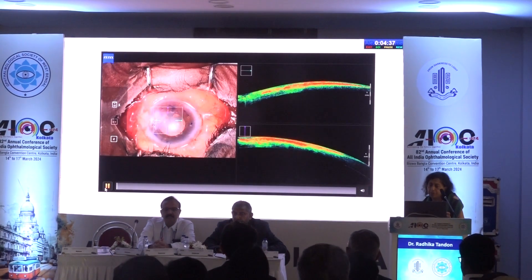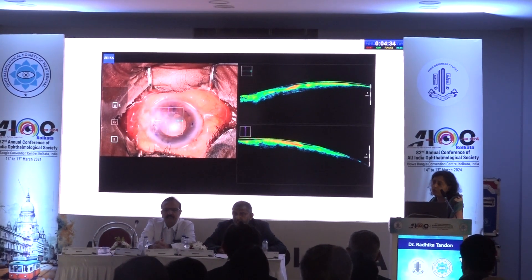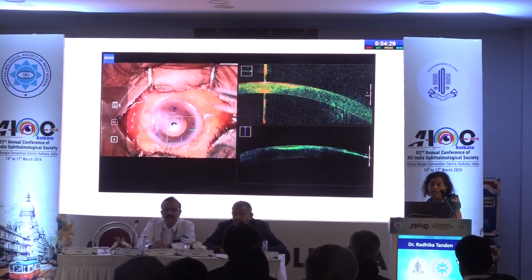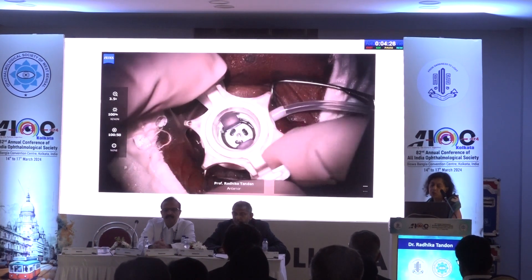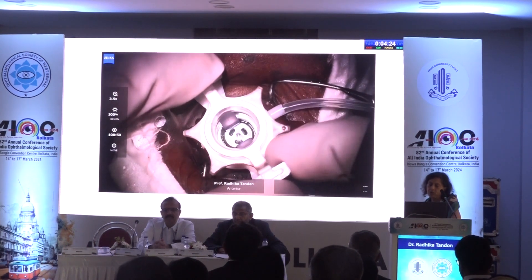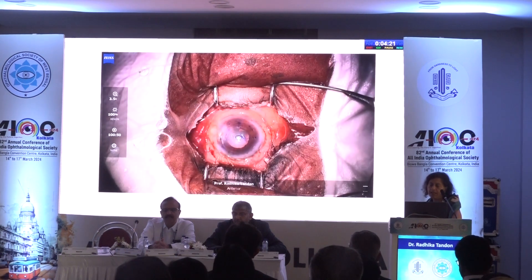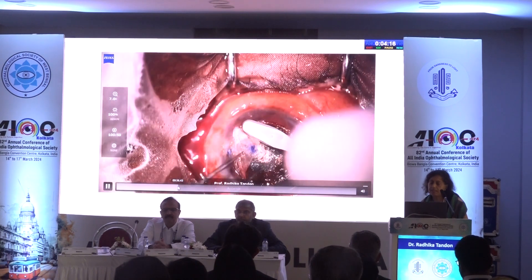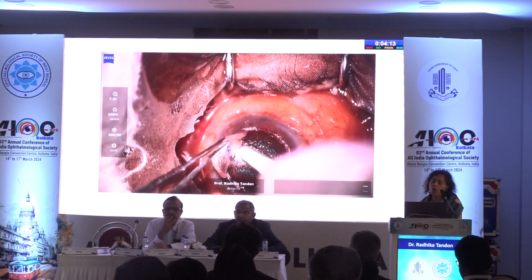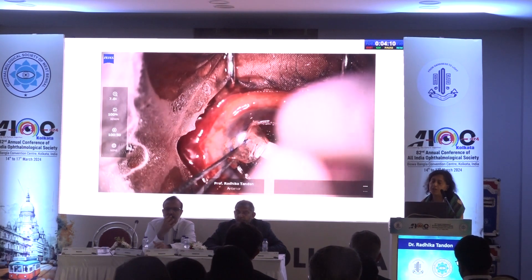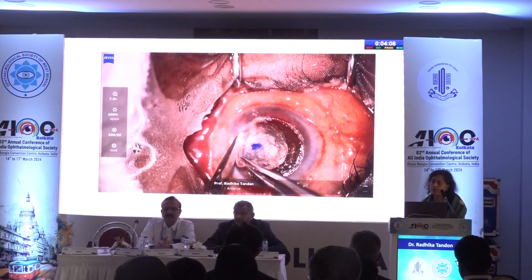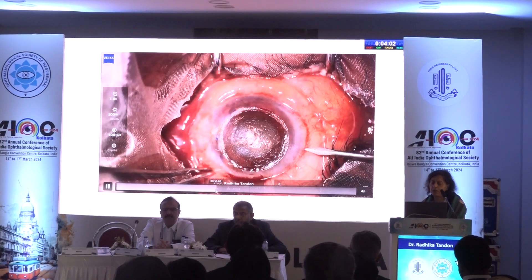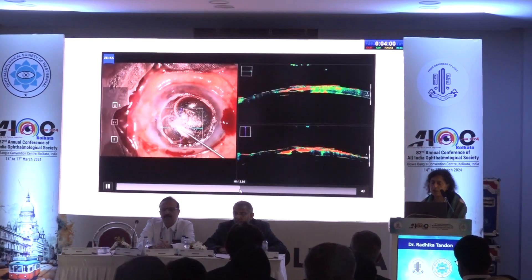Here is the surgical video. The ASOCT preoperatively helps you decide the depth if you are using a vacuum trephine as a starting point, so it helped decide the depth to go. This is a Moria version of a vacuum trephine, and then you do a lamellar dissection. I would say it is not only a question of 3D surgery — there's a kind of fourth dimension where you're also getting the physical feel of the tissue, which can make a difference because sometimes the tissues are much harder and more rigid during dissection.